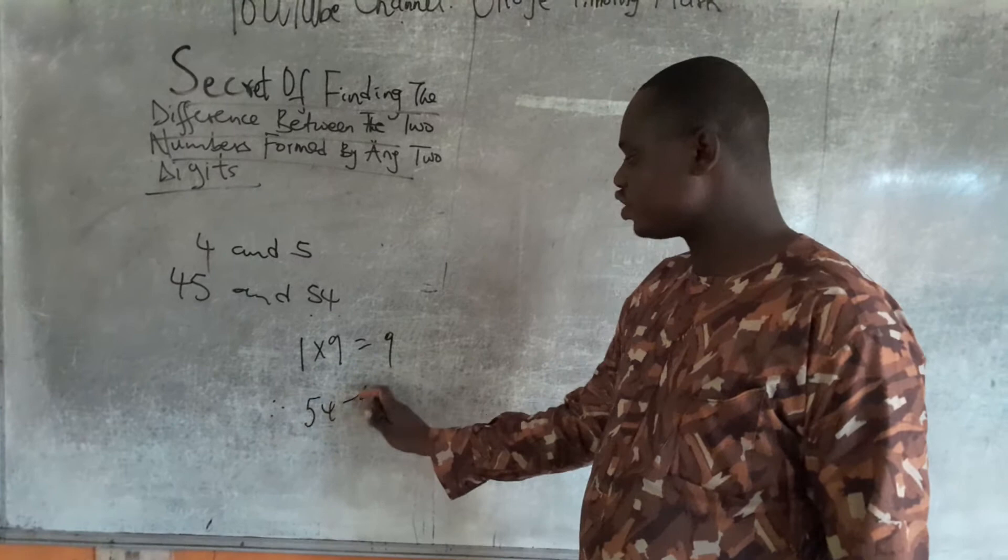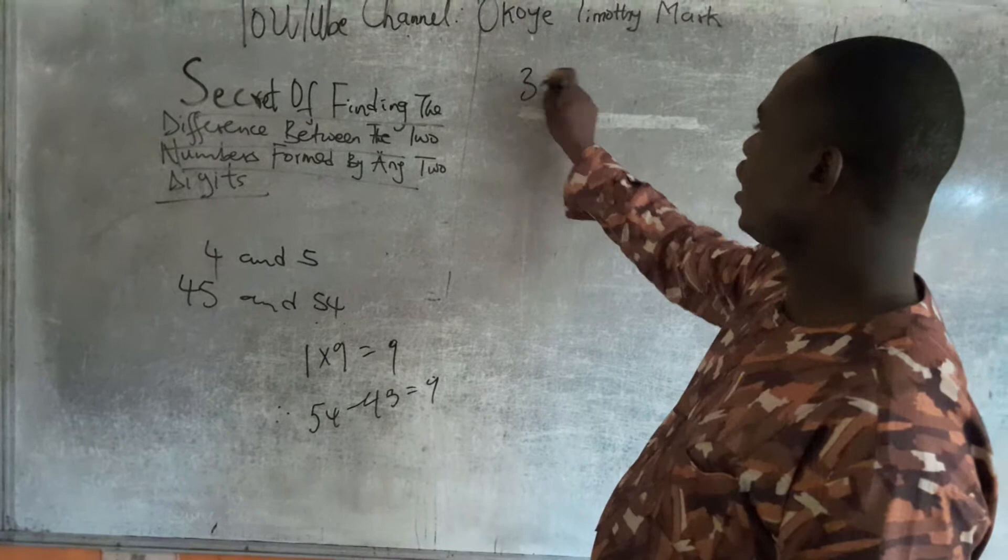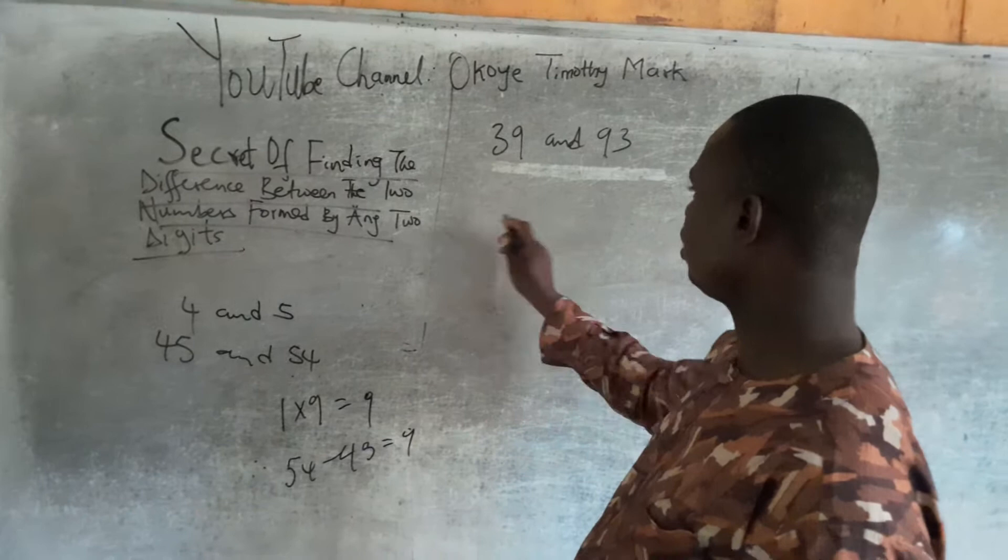Hence, 54 minus 45 is 9. If I have 39 and 93, formed by combining 3 and 9, and I want to know the difference between them, I will simply say 9 minus 3, that gives you 6.